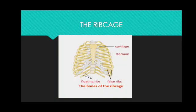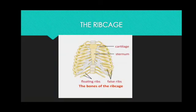The eleventh and twelfth pairs of ribs are not attached to the sternum and are called floating ribs. The rib cage forms a cage that protects the heart, lungs, diaphragm, liver, stomach, and kidney. The space enclosed by the rib cage is called the thoracic cavity.